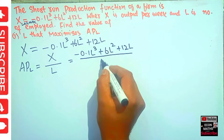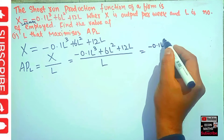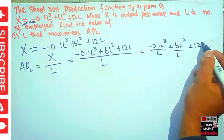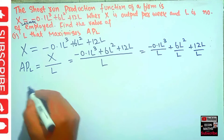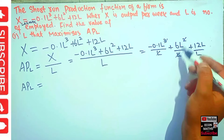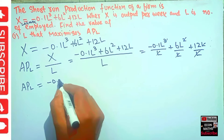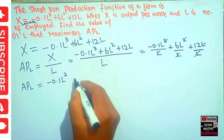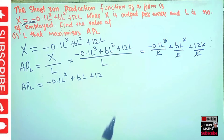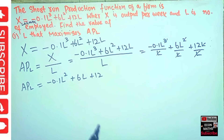So APL equals X over L, which is: minus 0.1 L cubed plus 6 L squared plus 2L, all divided by L. Expanding this: minus 0.1 L cubed over L, plus 6 L squared over L, plus 2L over L. Canceling the L terms, we get APL equals minus 0.1 L squared plus 6L plus 2. This is our average product of labor.